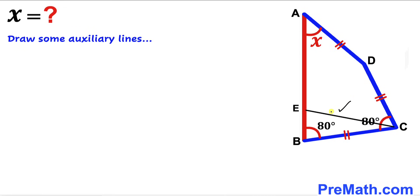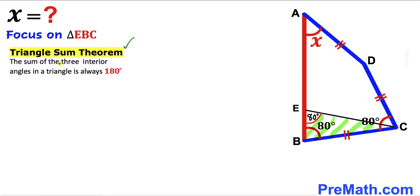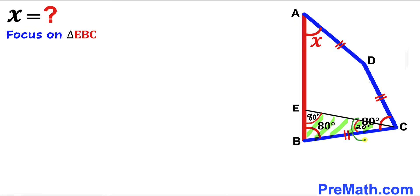We create line EC such that angle BEC is 80 degrees as well. Now let's focus on triangle EBC and recall the triangle sum theorem: the sum of three interior angles in a triangle is always 180 degrees. In triangle EBC, we know angle EBC is 80 degrees and angle BEC is 80 degrees, so therefore angle BCE is going to be 20 degrees.